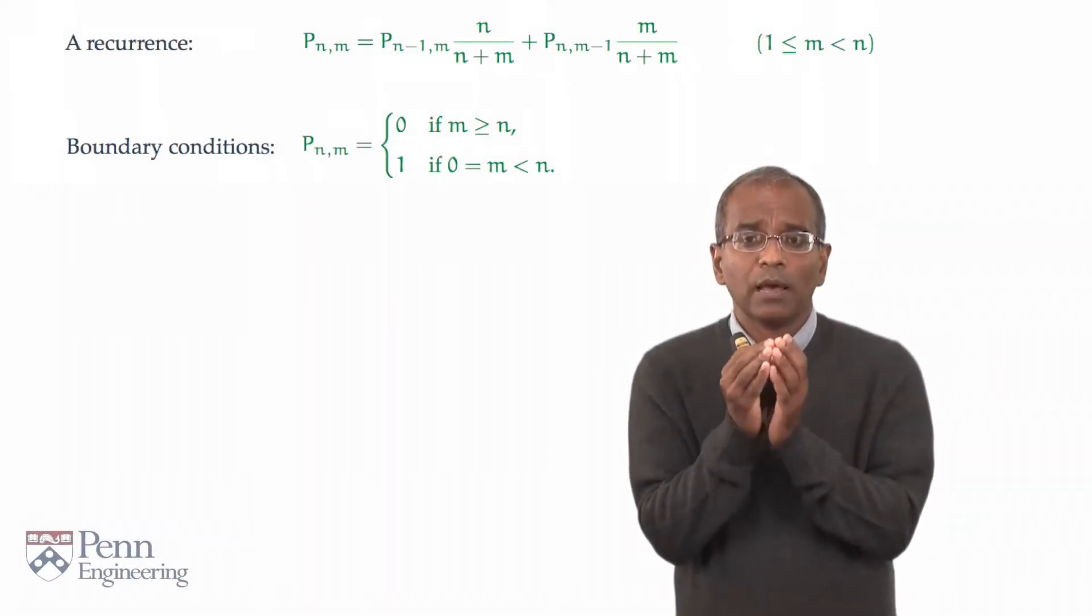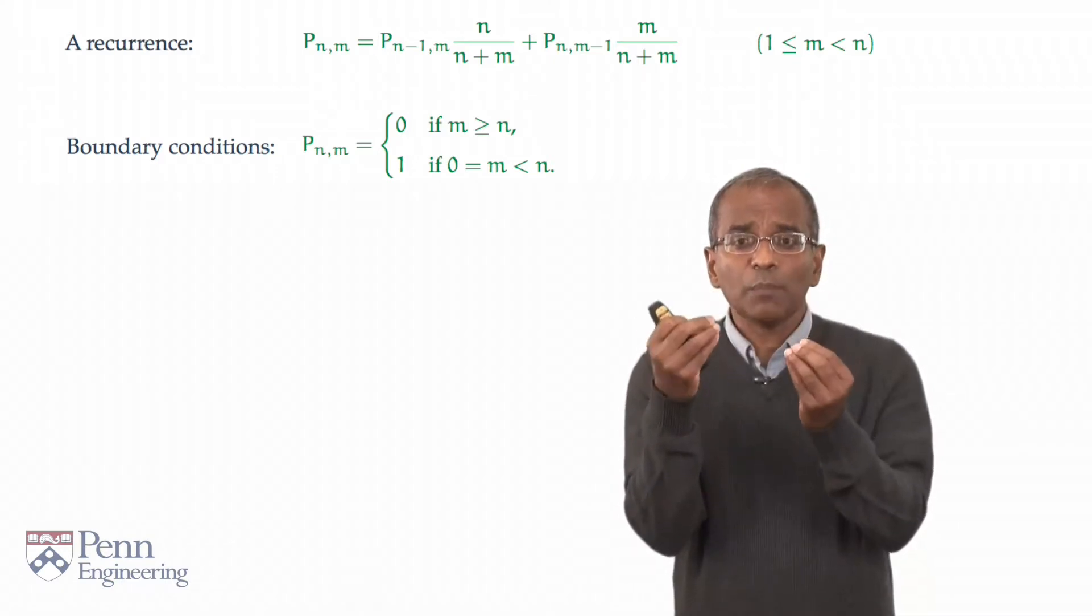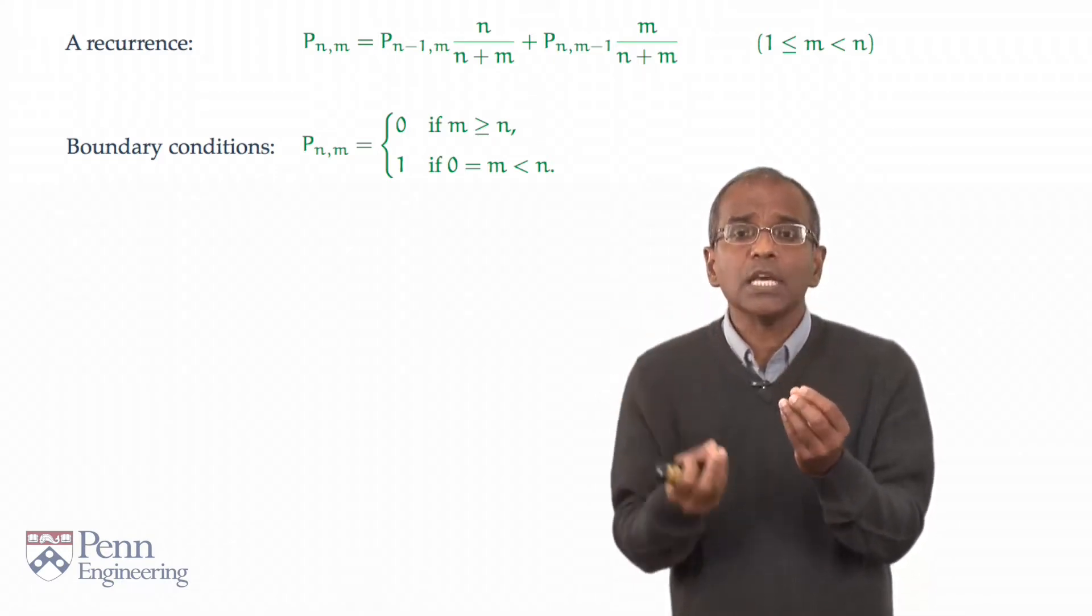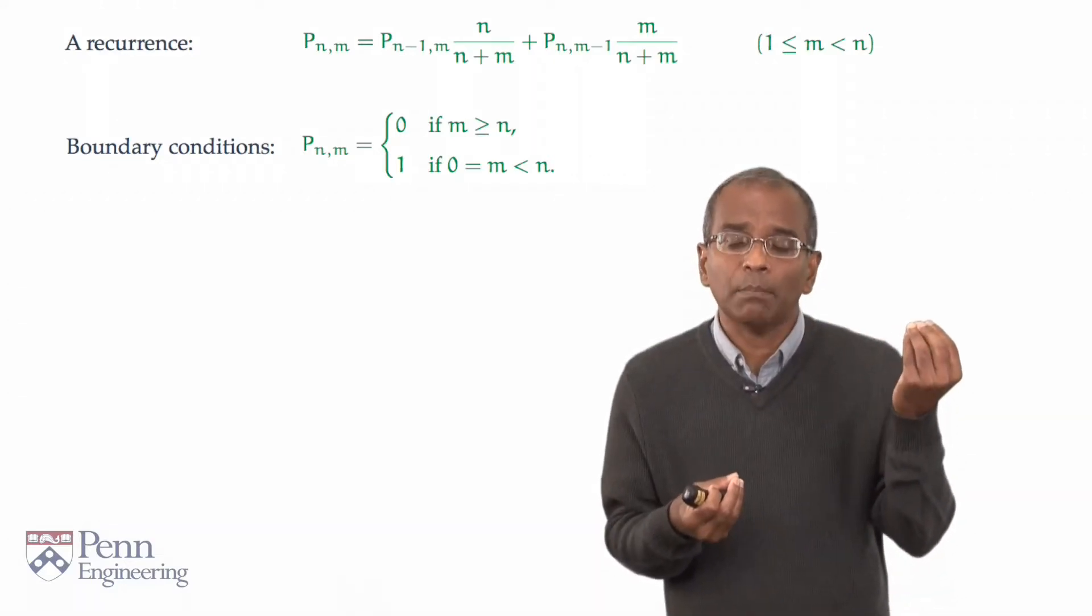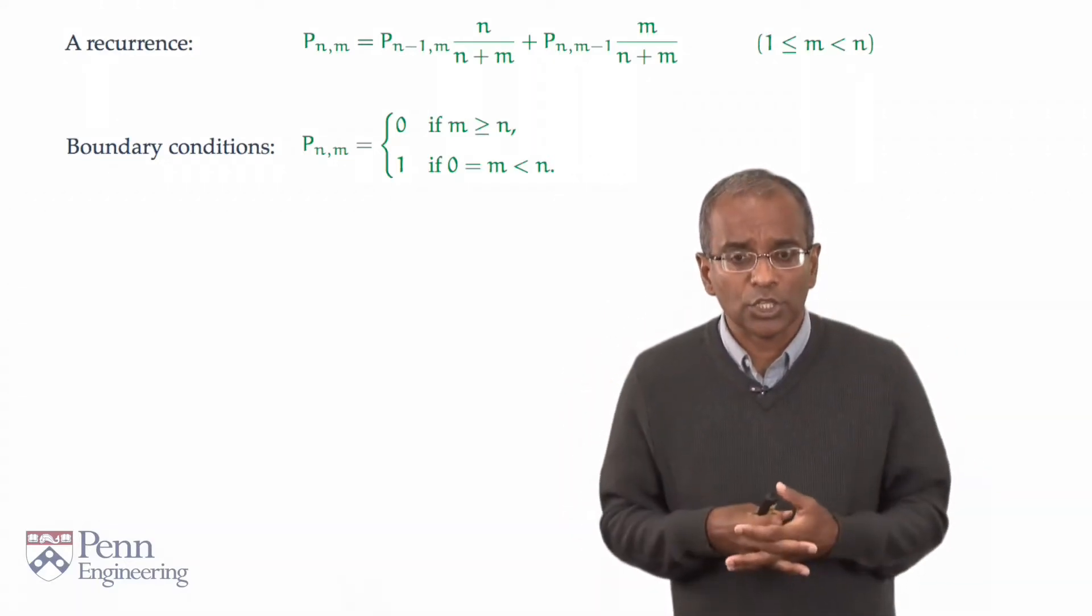Here is our recurrence. We have a recurrence for p of n and m in terms of p of n minus 1 and m, and p of n and m minus 1.